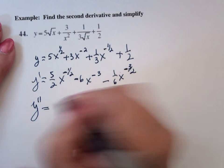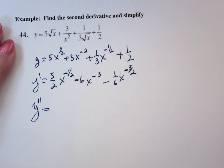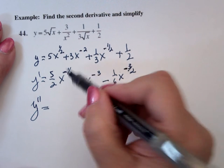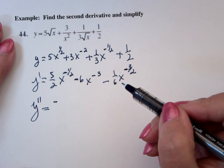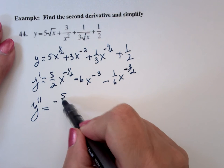Y double prime, and you just do it again. -1/2 times 5/2 is -5/4,